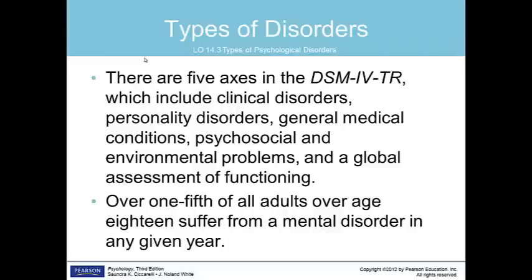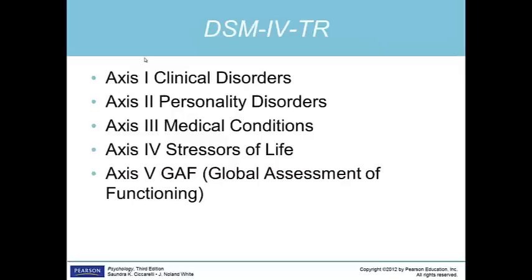Over one-fifth of all adults over 18 have a mental disorder in any given year. As a mental health professional assesses the client, they use all the axes of the DSM to reach a diagnosis. Axis 1 is used primarily for clinical disorders such as depression, and it is what most people are diagnosed with.